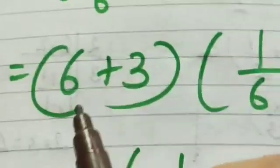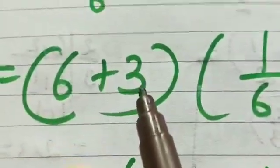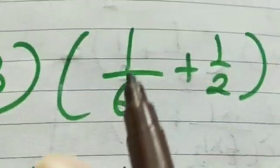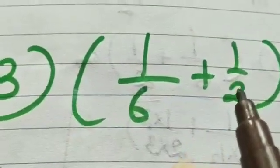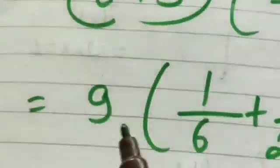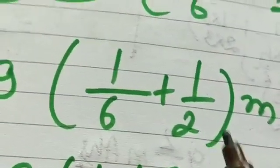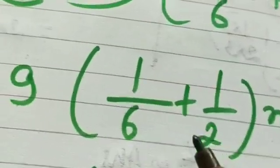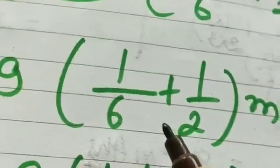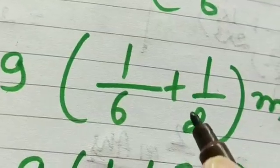So we'll see the next step: 6 plus 3 and the fractional 1/6 plus 1/2. So 6 plus 3 is 9. Now we will see this 1/6 and 1/2. So these two fractions cannot be added directly. Why? Because these are unlike fractions.